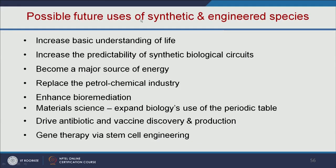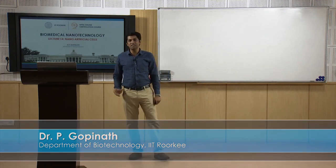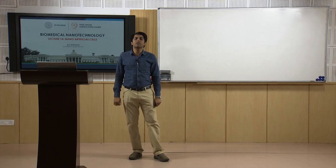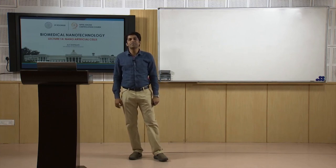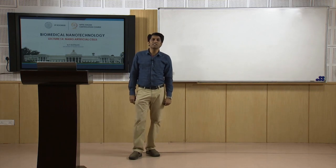Possible future uses of synthetic or engineered species include: increased basic understanding of life, increased predictability of synthetic biological circuits, replacement of the petrochemical industry, biofuel production, enhanced bioremediation, major roles in material science, driving antibiotic and vaccine discovery and production, and gene therapy via stem cell engineering. As a summary of this lecture, we have learned what is an artificial cell, how to make enzyme-based artificial cells and artificial RBCs, the various applications of artificial cells in cancer therapy and enzyme therapy, and what is a synthetic cell and minimal bacterial cell and their various applications. Thank you all for listening to this lecture. I will see you in another interesting lecture.